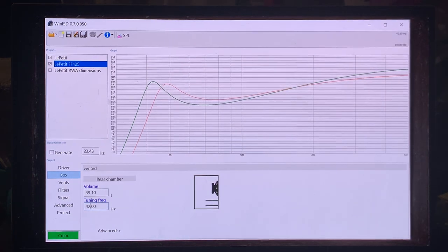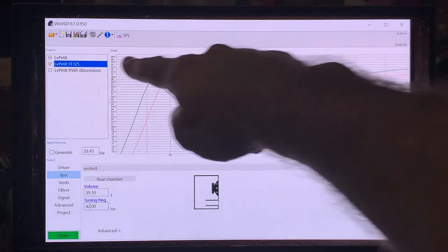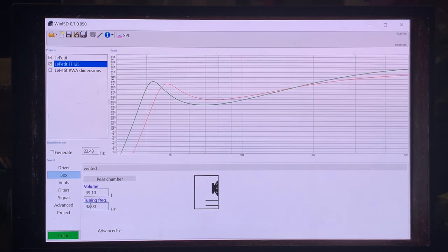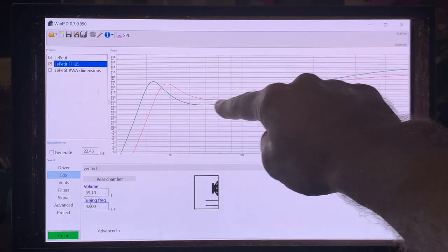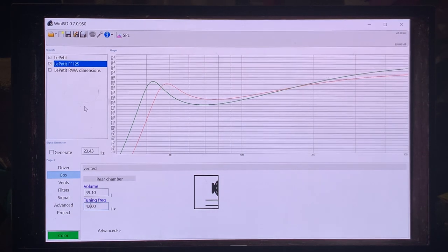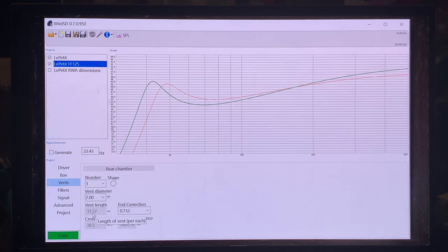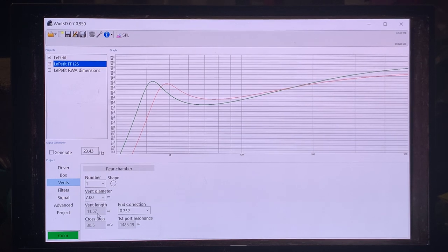And it's just really going to have serious low-end. And if you think that the Le Petit needs a sub, then with the FF125 tuned to this 42 hertz, then you will probably think, okay, I don't need a sub anymore for that. The price for that will be a slightly leaner mid-bass, but as you see, that's just 1 dB leaner, so that won't be that much of a thing happening. So let's see the vent length. So here you will need an 11.6 centimeter long port, if you want to tune it to that crazy low tuning. Yeah, so that's it.